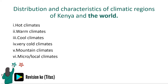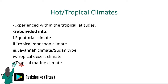We are going to start with the hot climates. Take time to look at maps in your recommended course books. Hot climates are experienced within the tropical latitudes and are again subdivided into the equatorial climate, the tropical monsoon climate, the savannah climate or Sudan type, the tropical desert climate, and the tropical marine climate.